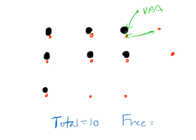As you can see above, this valproic acid molecule has kicked off phenytoin. Now we have four free phenytoin molecules. We still have the same total number of 10, but now we have a higher free fraction.